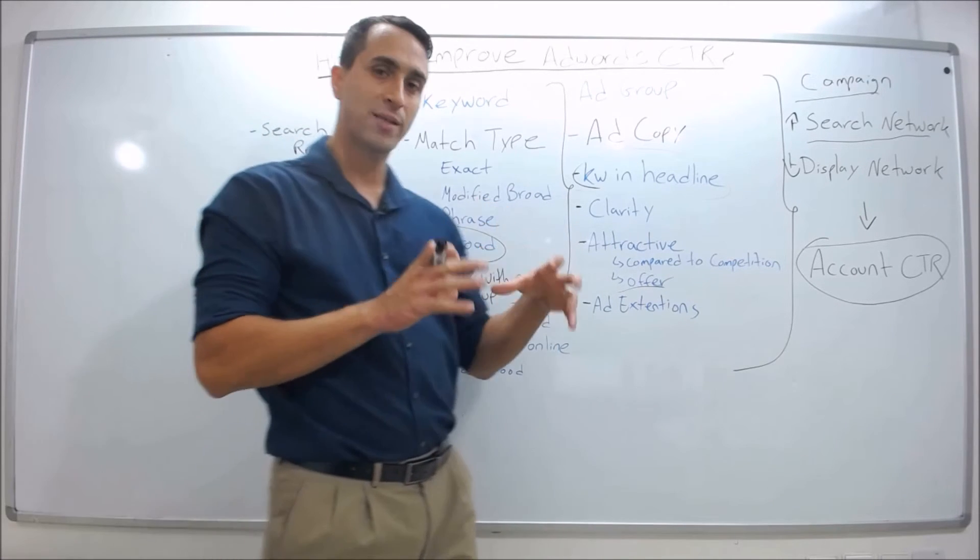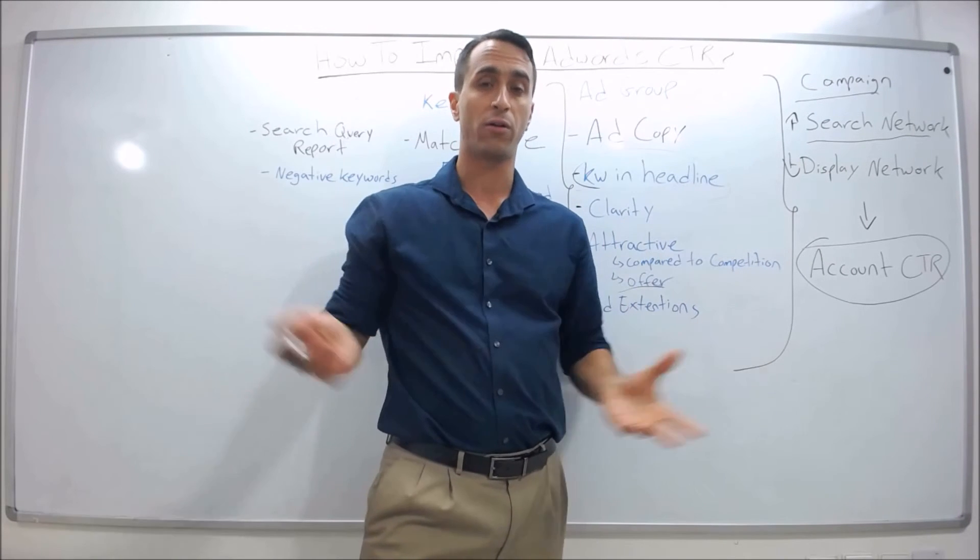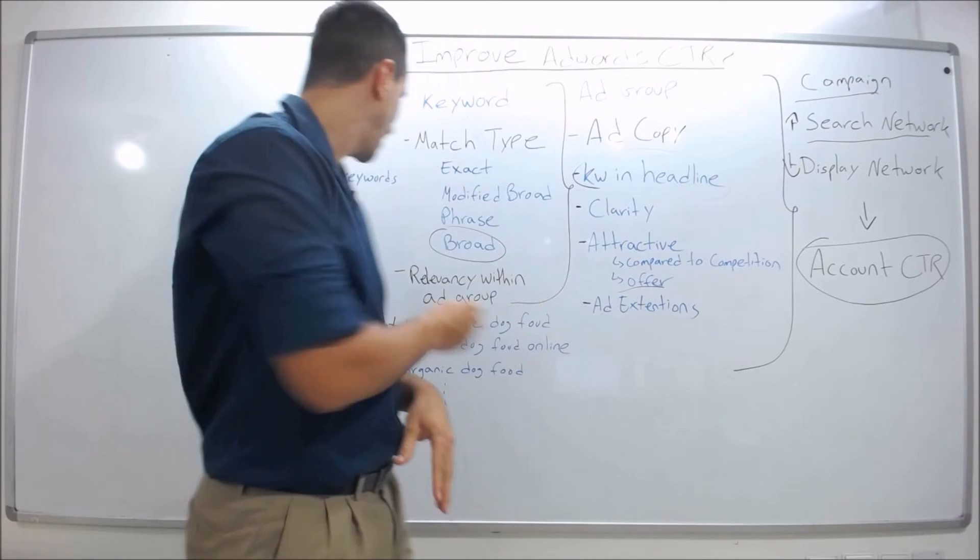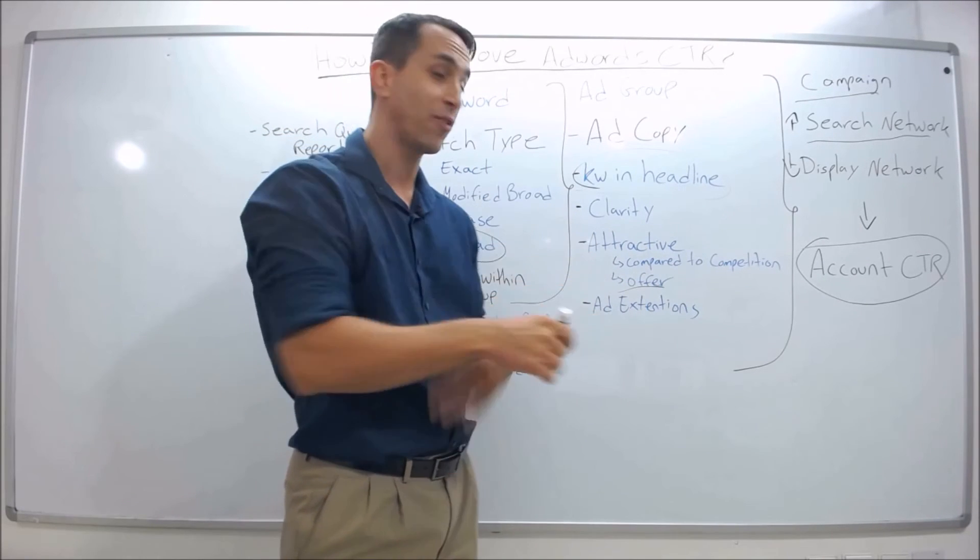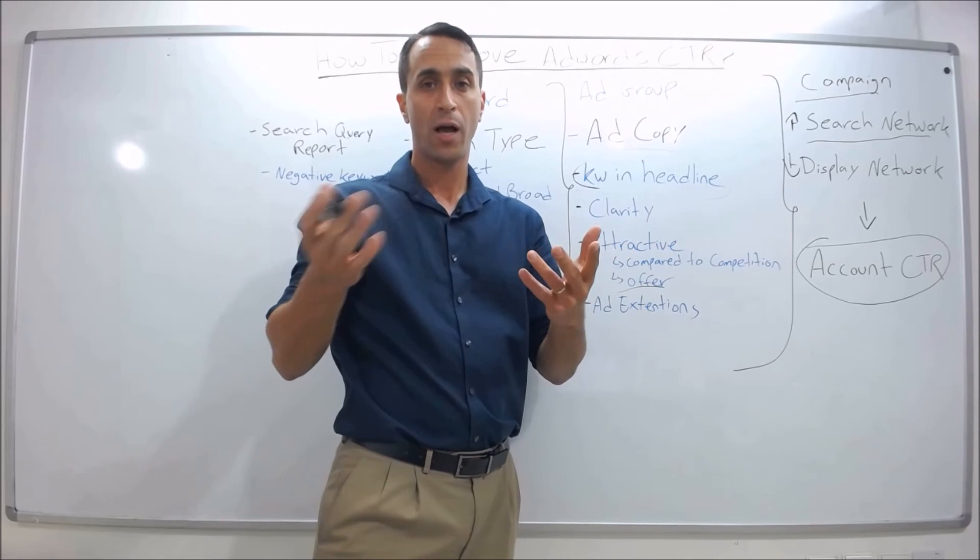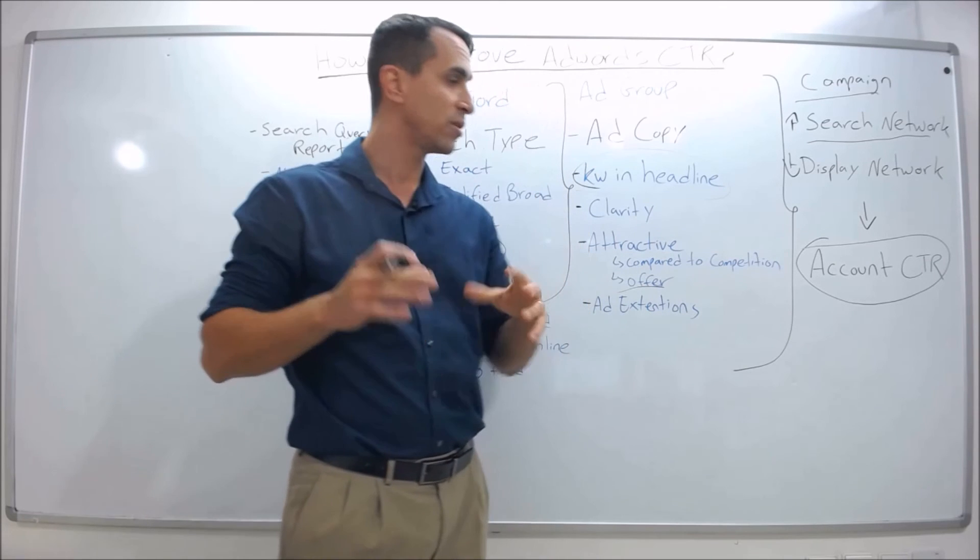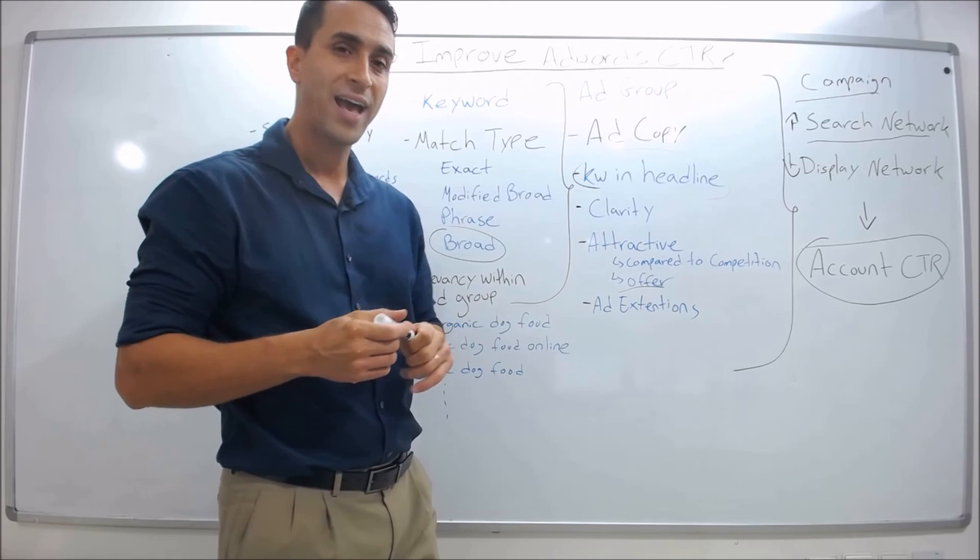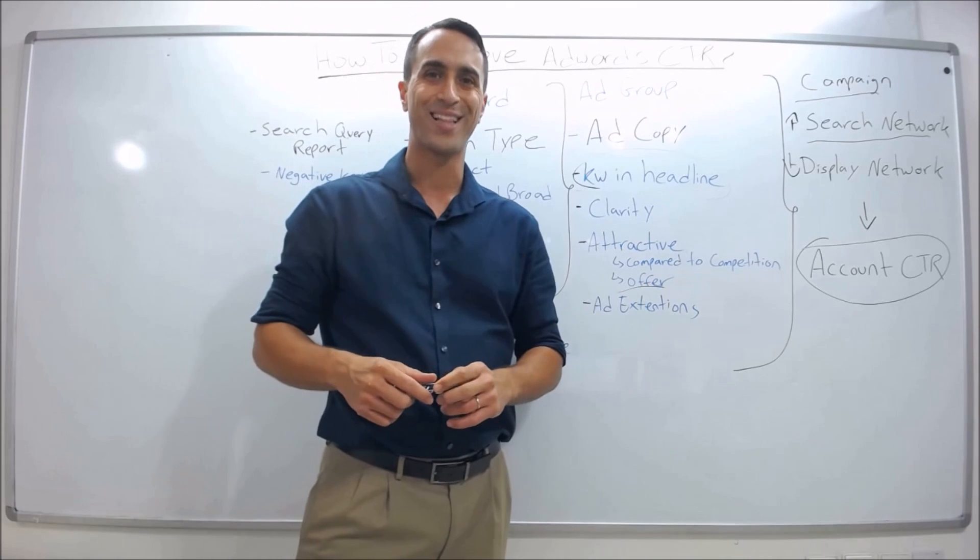Whatever ad group has a lot of impressions has the most opportunity to improve the overall account click-through rate. Either you add negatives and reduce the number of impressions, or you optimize the ad copy for that ad group and those impressions convert to more clicks, giving you higher click-through rate for the account. Really follow the 80-20 rule - see where all the impressions are and optimize based on that. These are the basic guidelines of how to improve your account click-through rate. Thank you and good luck.